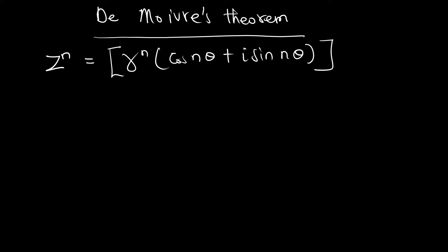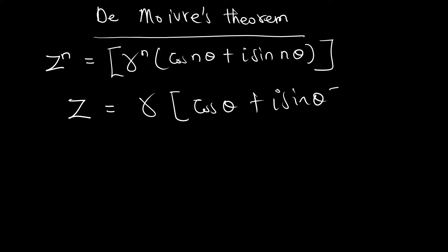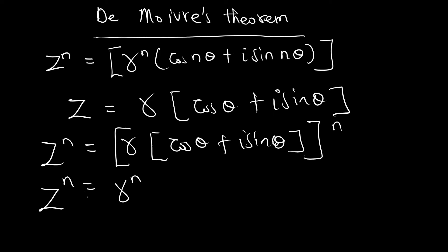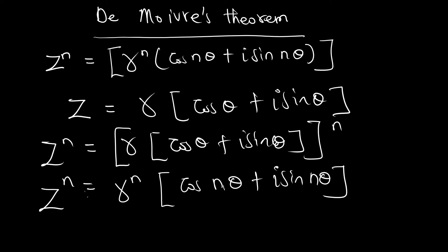What De Moivre's theorem means is: when I have a complex number z, in the polar form z equals r times (cos θ + i sin θ), and I want to find z to any power, say z to the nth power, I raise the modulus to the power, then multiply the argument by the power. So z to the power n equals r^n times (cos(nθ) + i sin(nθ)).